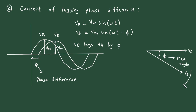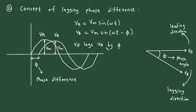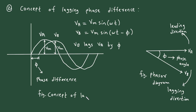In this phasor diagram, this direction is called the lagging direction and this direction is called the leading direction. Vb lags Va by φ. This is the phasor diagram, representing the concept of lagging phase difference in alternating quantities.